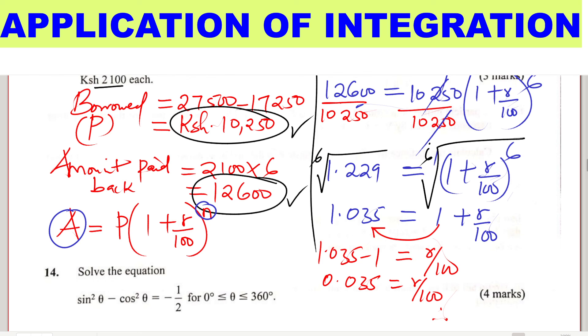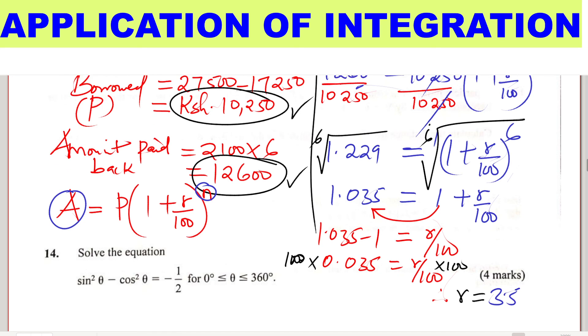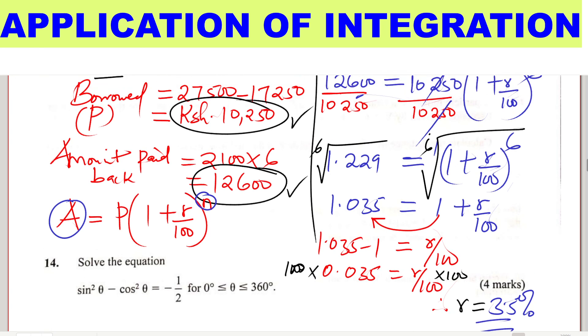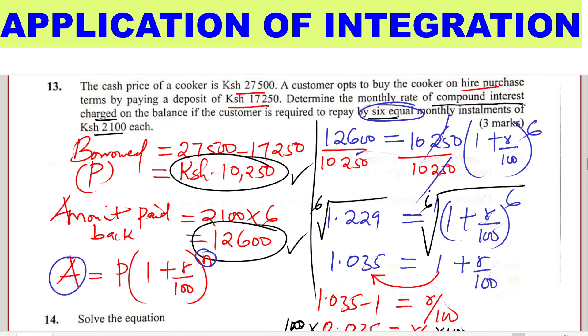We get R by multiplying both sides by 100. This gives R equals 3.5, or 3.5 percent. That is how you calculate the monthly rate of compound interest.